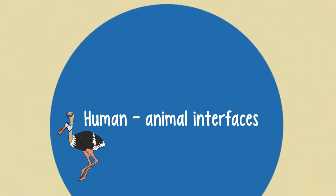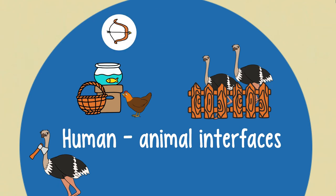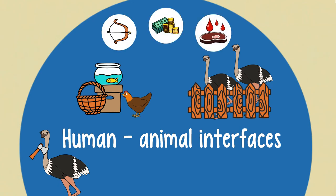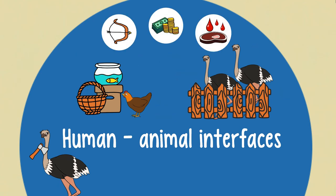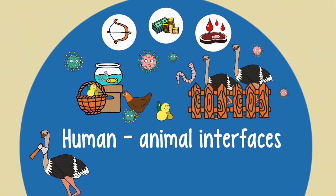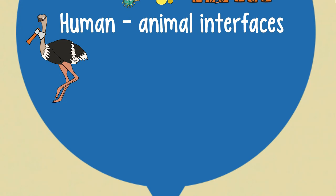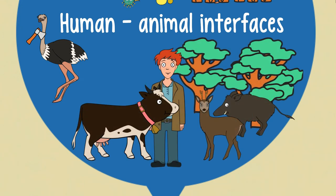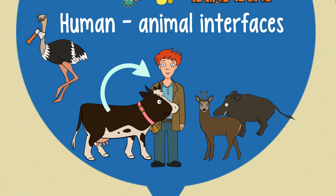To sum it up, any person handling live or dead animals at wet markets or farms, during hunting, trade, or cooking, is exposed to potentially zoonotic pathogens lingering in animal carcasses and body fluids. The more we mingle with wild animals, the more opportunities for spillover we create, and right now we create those opportunities at an excessive rate.